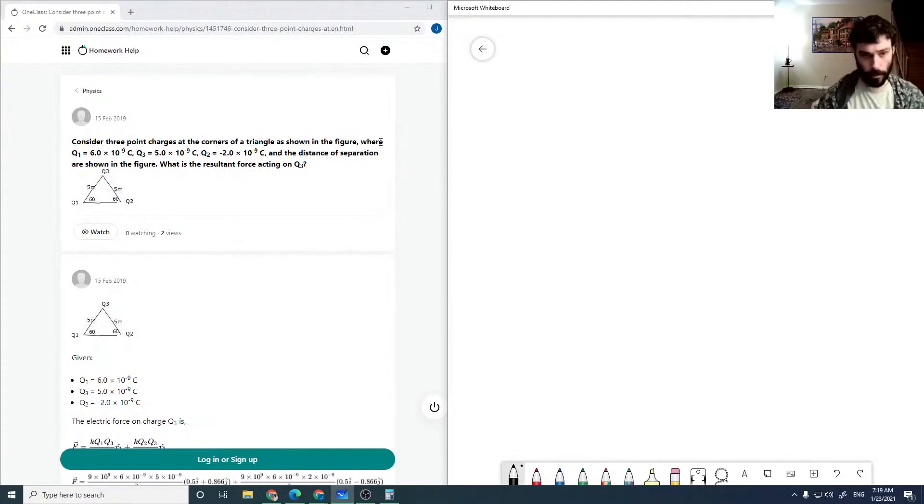Okay, so we have three points on an equilateral triangle. I'm going to try to draw this as well as possible. Q1, Q2, Q3 each are five meters away from each other, and these angles are all 60 degrees.